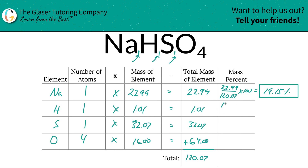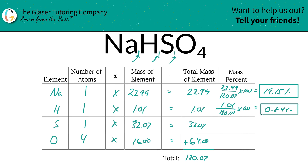Next, hydrogen — take the total mass of the hydrogen divided by the total mass of the entire compound, 120.07, multiply that by 100, and it's a very small percent. That comes out to 0.84 percent.